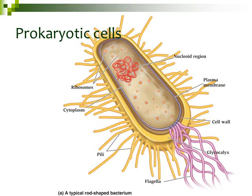This is a cartoon drawing of a prokaryotic cell. We're going to go through the different parts — there are eight different structures we're going to be looking at. I'm going to talk about the structure of each part, so what it looks like, and then the function of the part.